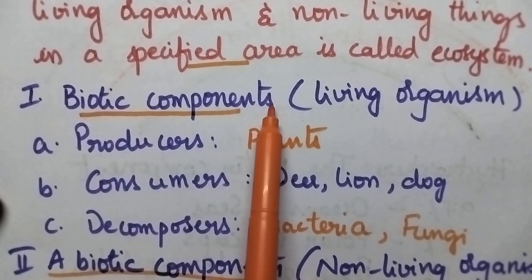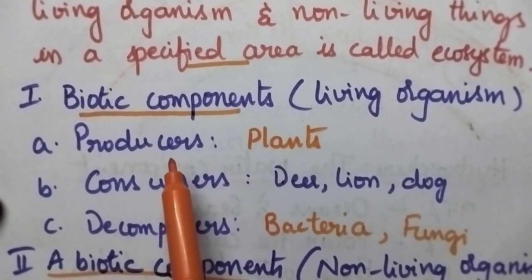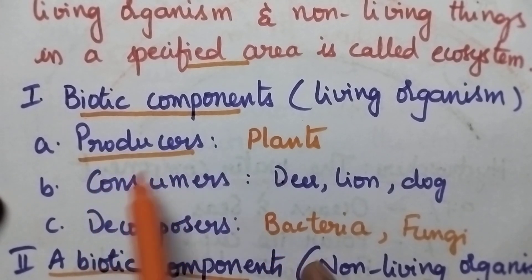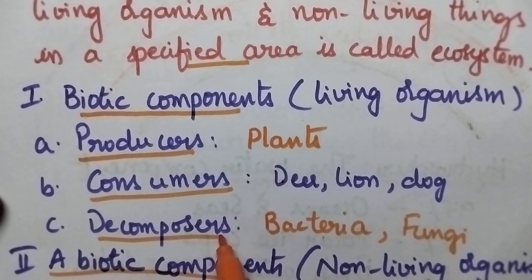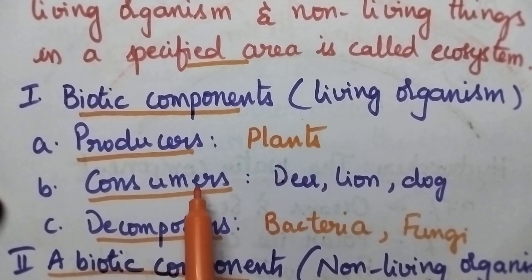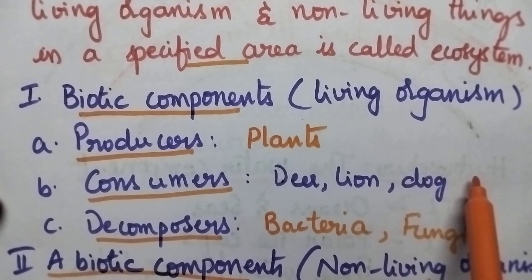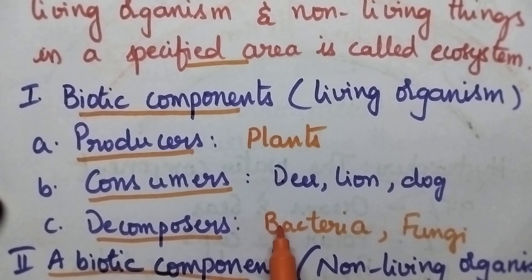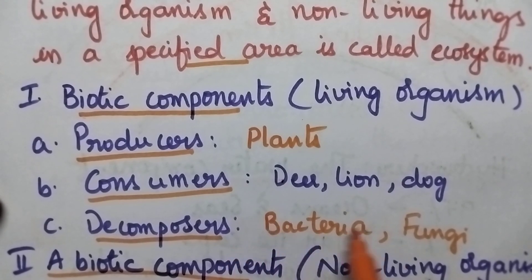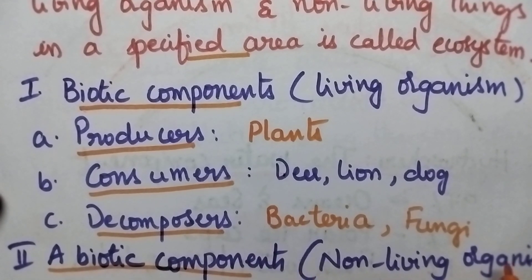Biotic components include living organisms. For convenience, living organisms can be classified into three segments: producers, consumers, and decomposers. Producers produce food material. Consumers consume the food material — they include deer, lion, dog, etc. Decomposers decompose the organic matter — they include bacteria and fungi.